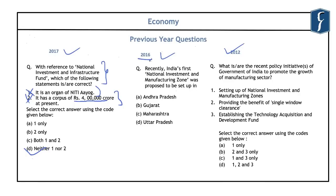The 2016 question asked where India's first National Investment and Manufacturing Zone was proposed — it was Andhra Pradesh. Another 2012 question on policy initiatives to promote the manufacturing sector included: setting up National Investment and Manufacturing Zones, providing single window clearance, and establishing technology acquisition and development funding. All three were correct, so the answer was D, 1, 2 and 3. These questions show UPSC asks about government initiatives boosting the manufacturing sector.